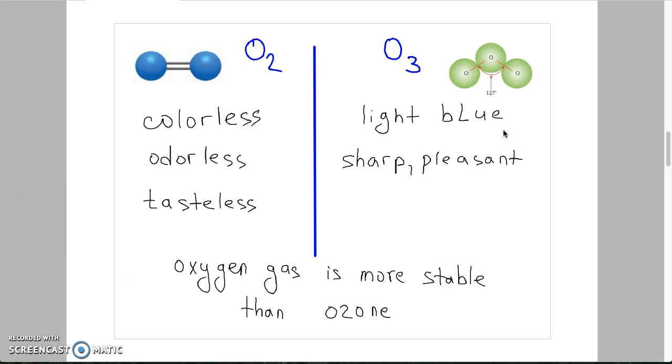But if we talk about ozone, ozone is a light blue colored gas with a sharp pleasant odor. Here we can see the structure or chemical formula of ozone.